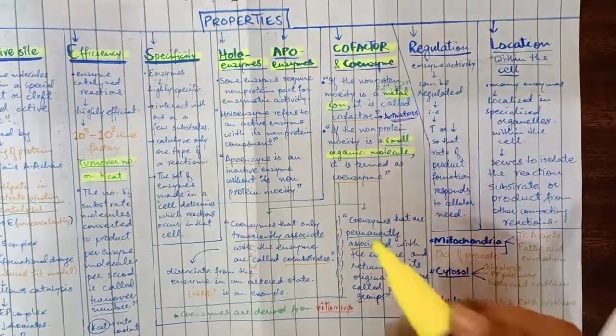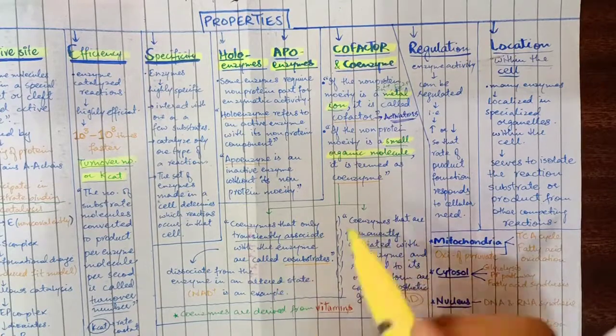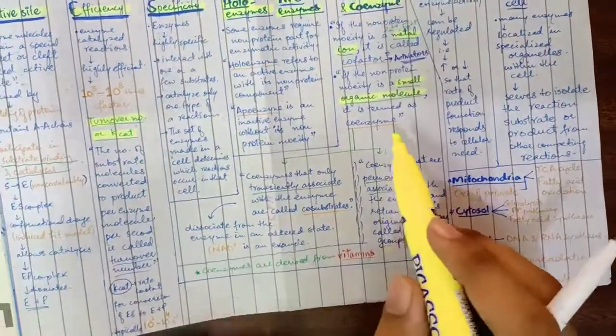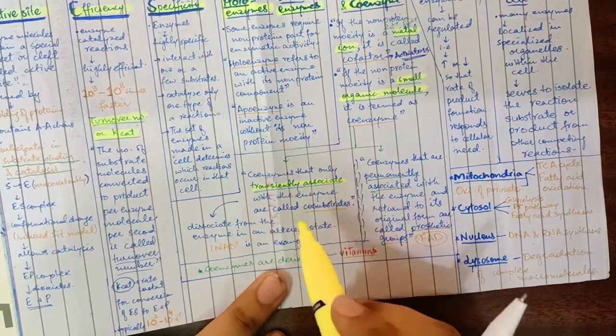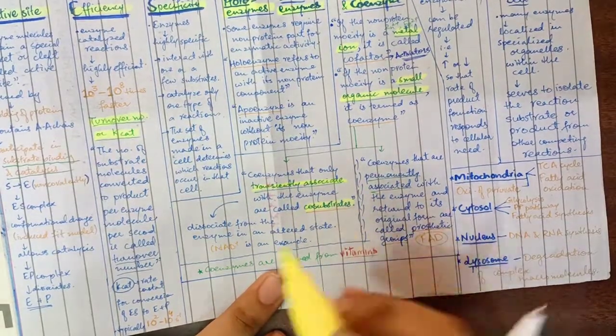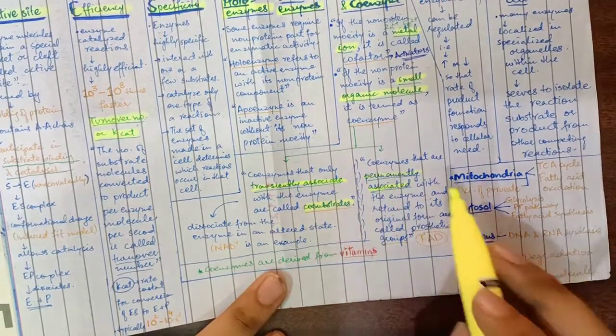Coenzymes are divided into two types. If coenzymes are transiently associated with enzymes, we call them co-substrates. If they are permanently associated, we call them prosthetic groups.